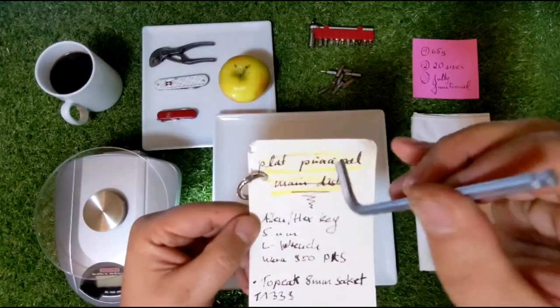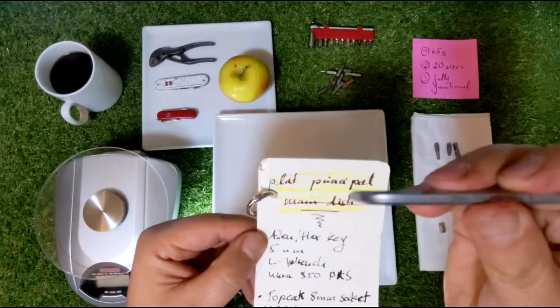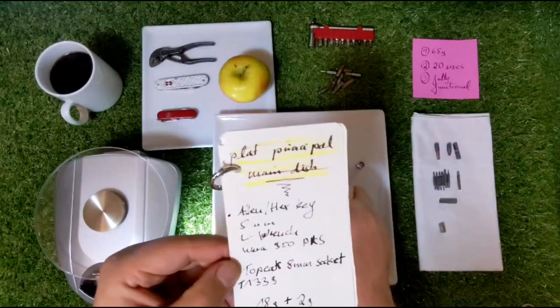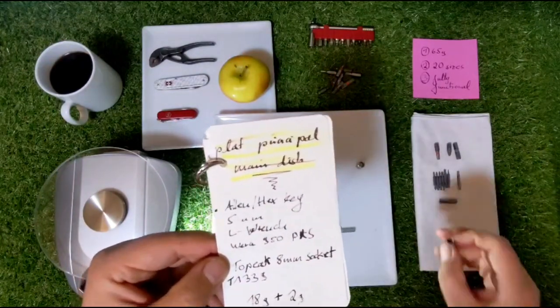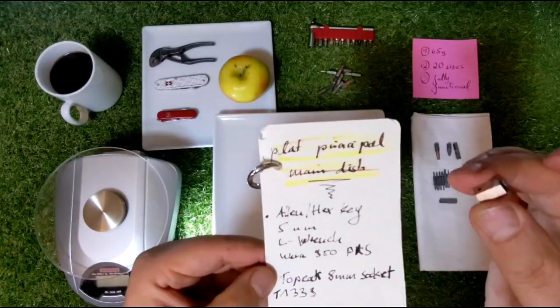It's the PKS, quite fancy one that does have a ballpoint here. You can use any, but I needed one that was long, so I chose this one. It's 90 millimeters long. We have the Topeak 8 millimeter socket T1339.